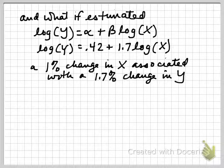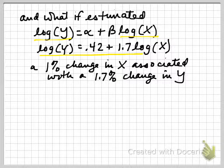And finally, if we estimated the log of y and the log of x in our expression, so we have both transformed as logs, for instance we have the log of y equals 0.42 plus 1.7 times the log of x, now we interpret that 1.7 as being the effect of a 1% change in x is now associated with a 1.7% change in y.